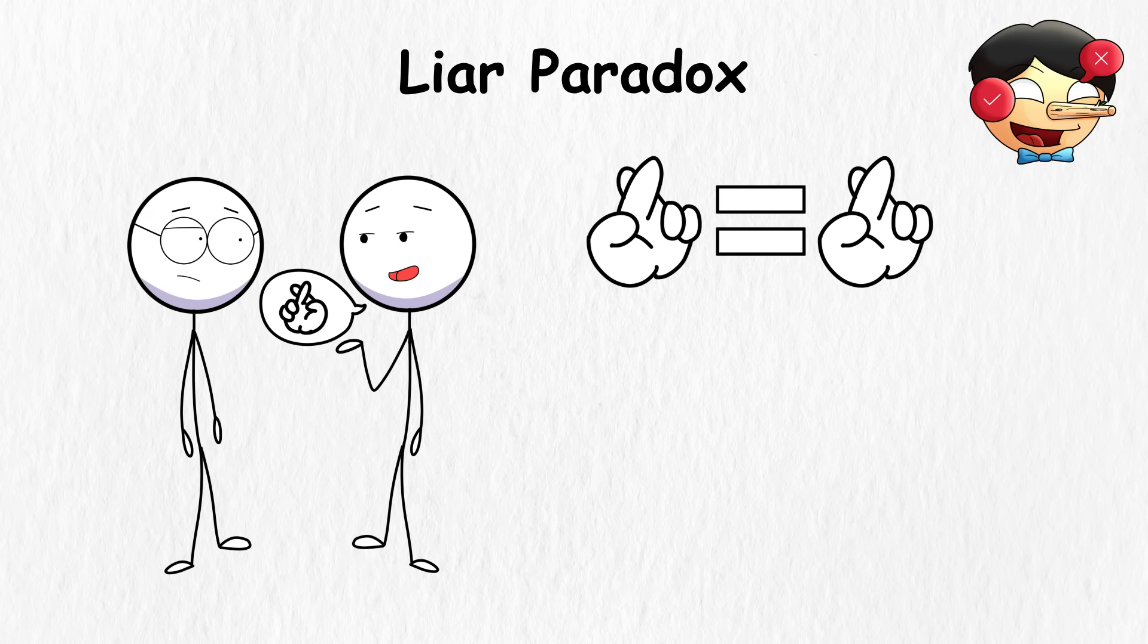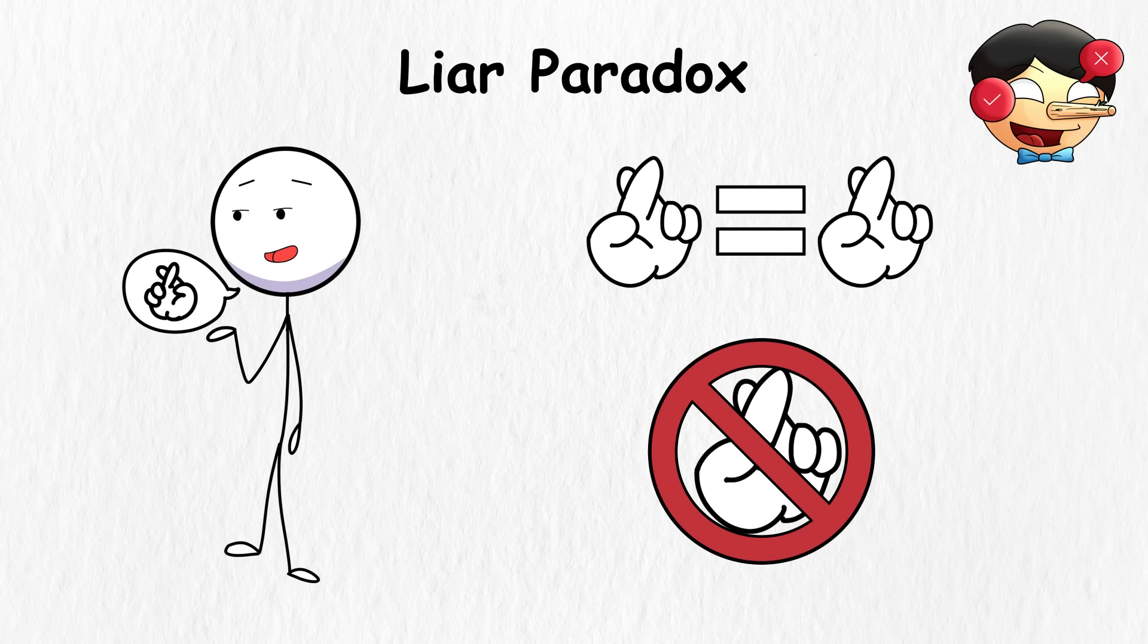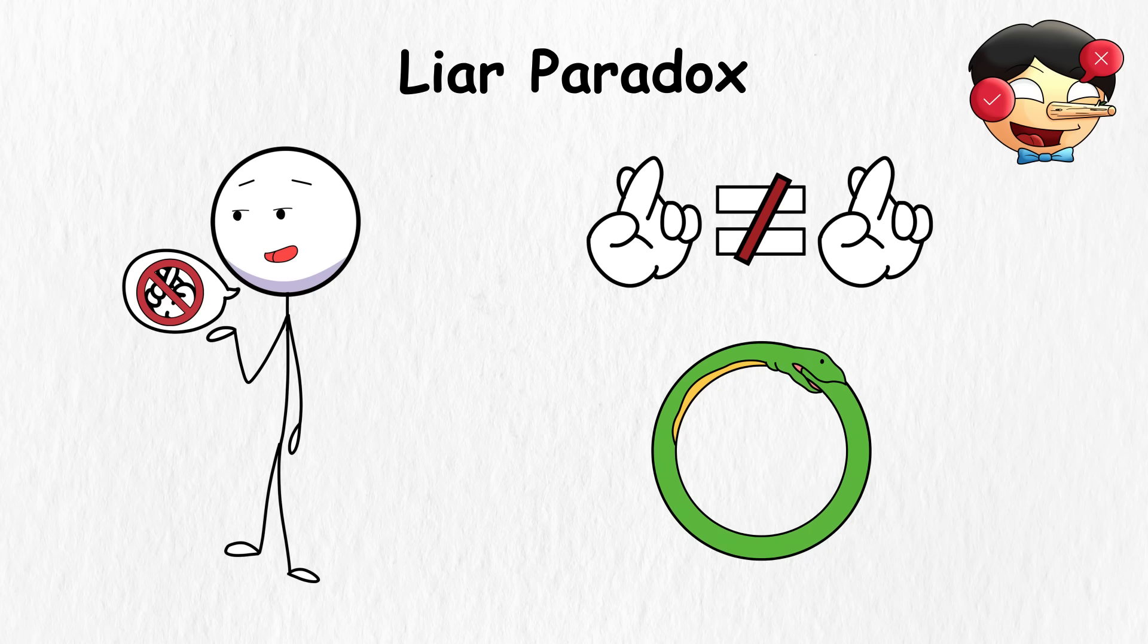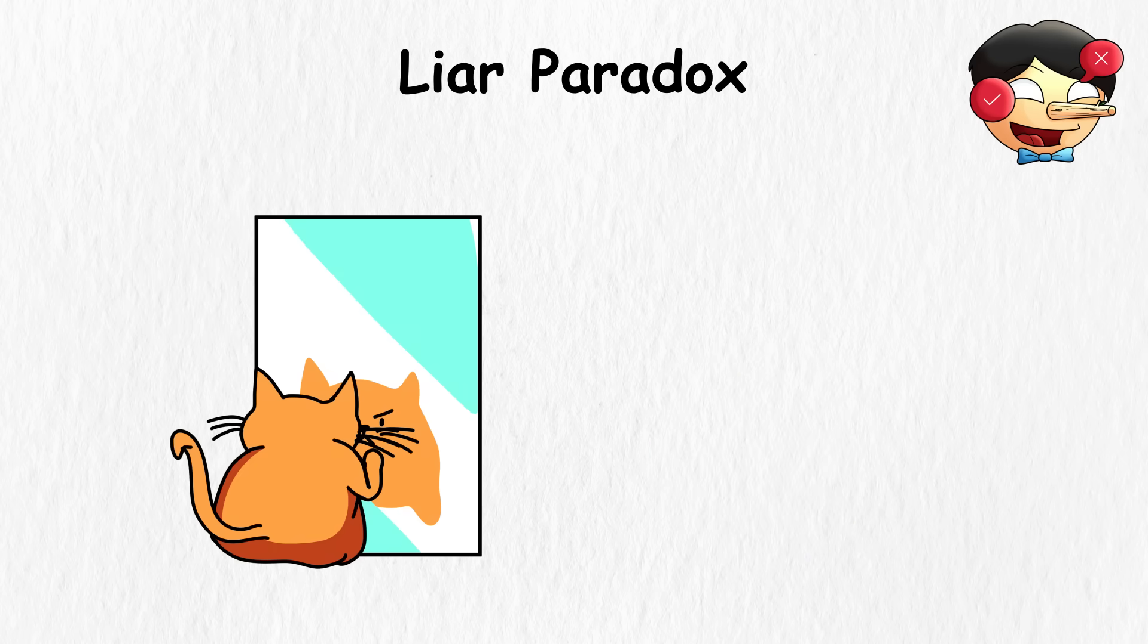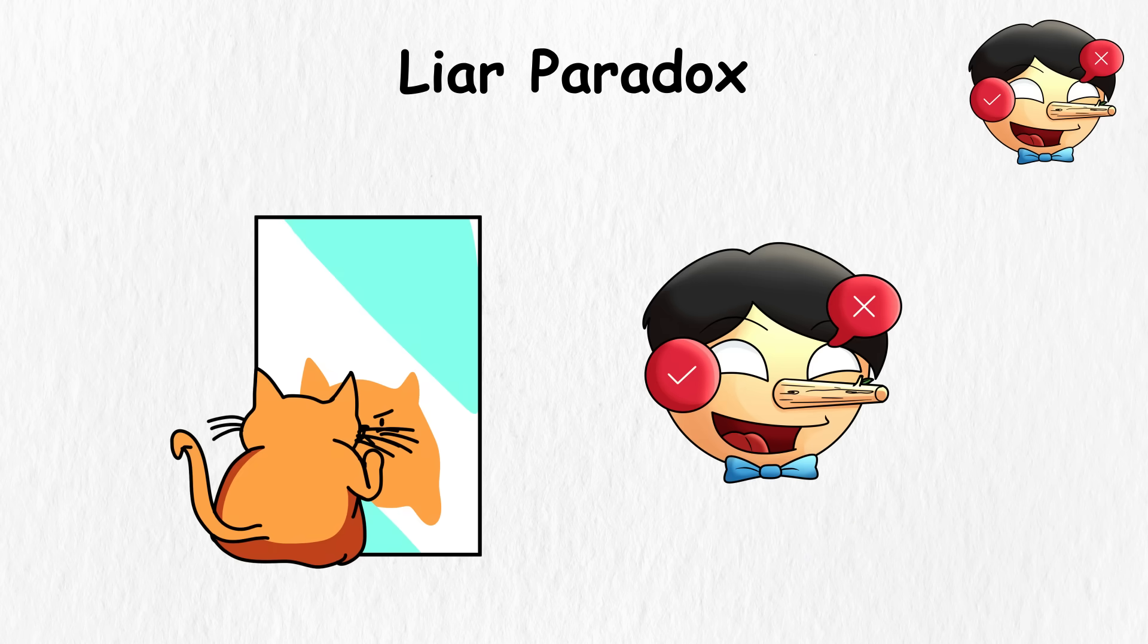If he's lying about always lying, that means he was telling the truth that he was a liar. But if he was telling the truth, it now contradicts his original statement that he's always a liar. It's like a snake eating its tail, or a cat chasing its reflection. That's basically what the liar paradox is all about.